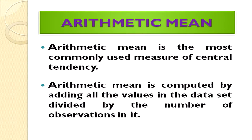What is arithmetic mean? It is the most commonly used measure of central tendency. It is computed by adding all the values in the data set divided by the number of observations in it. This is how we calculate arithmetic mean.